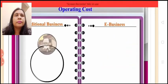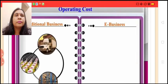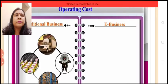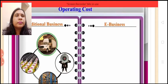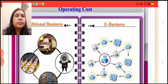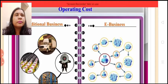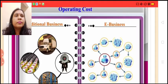Operating cost: Traditional business involves high operating cost due to fixed charges related to investment in procurement and storage, production, marketing and distribution facilities. Whereas e-business involves low operating cost due to dependency on relationship networks rather than ownership of resources.